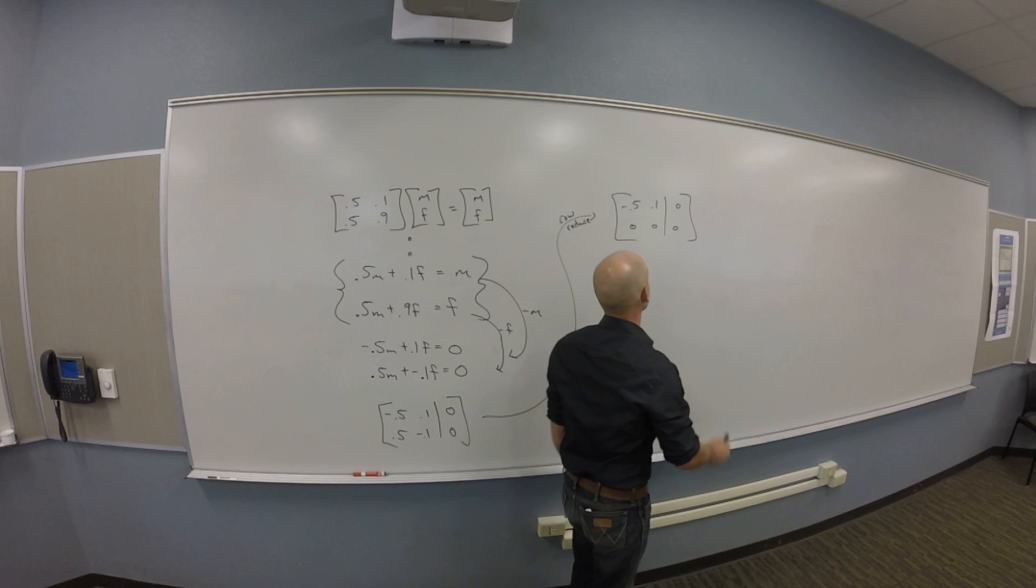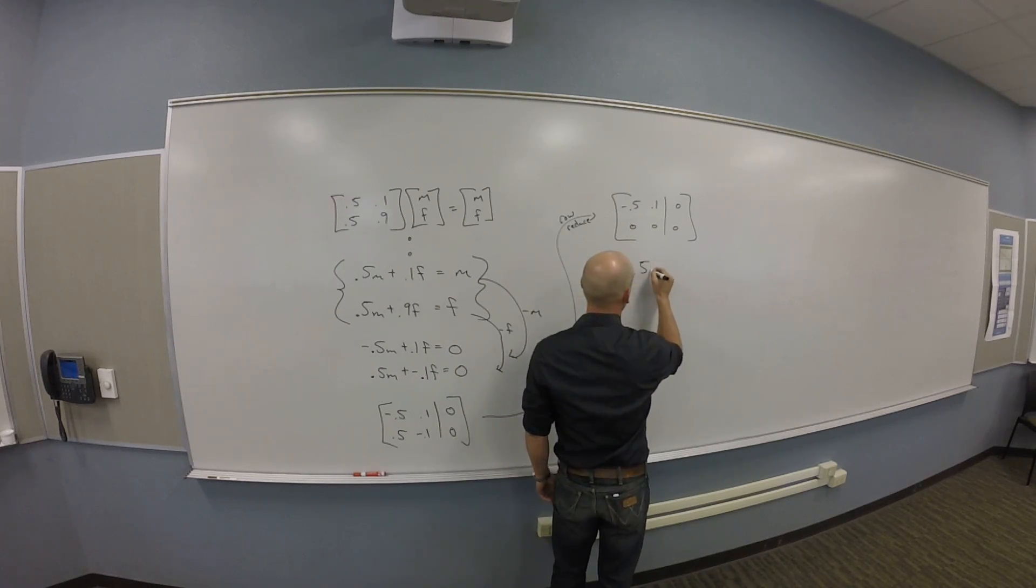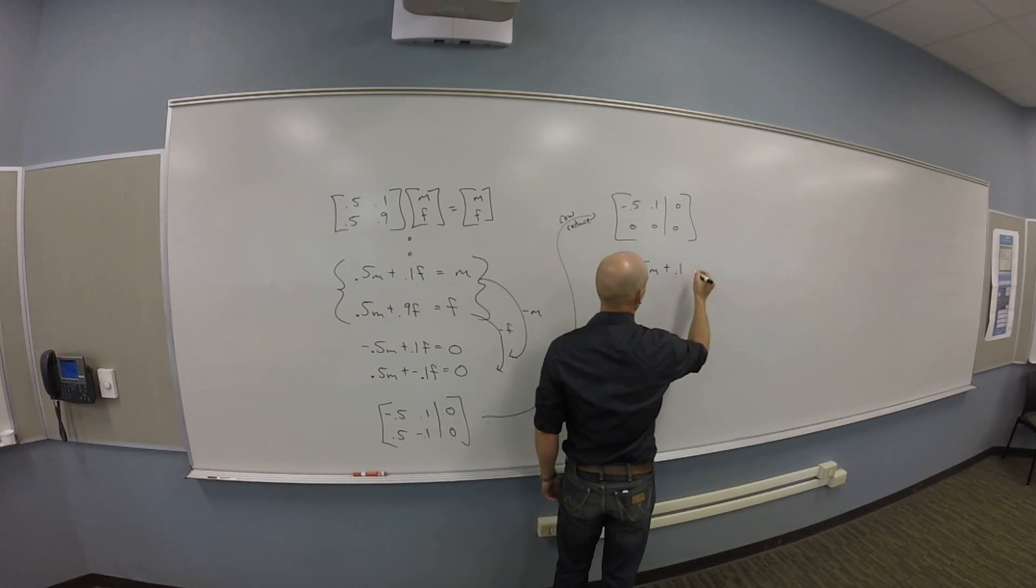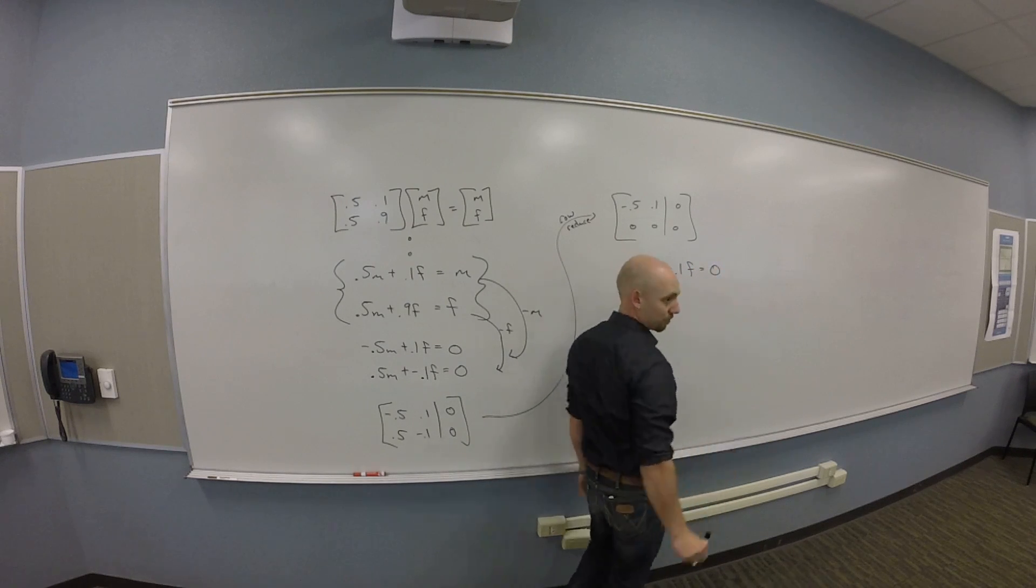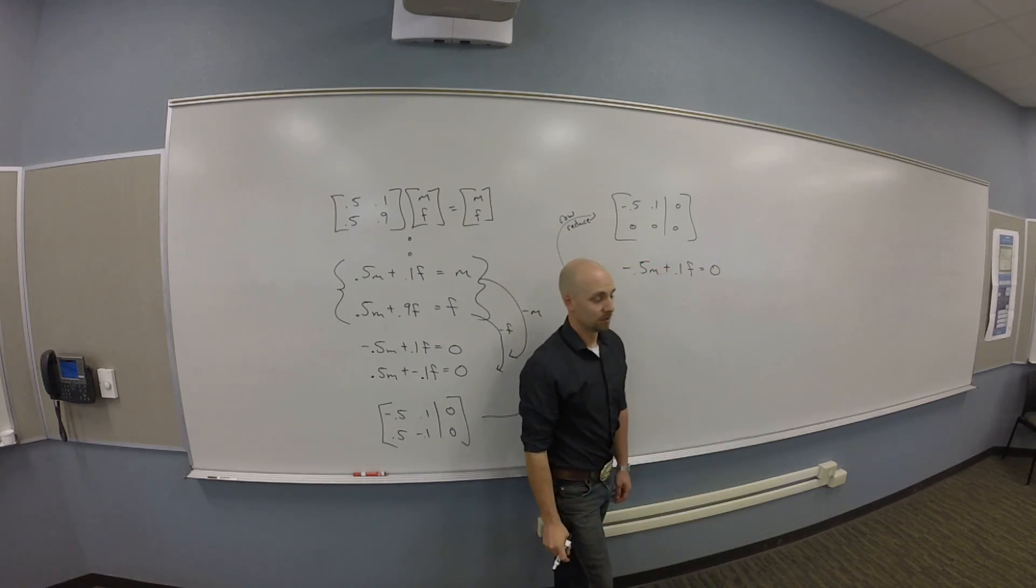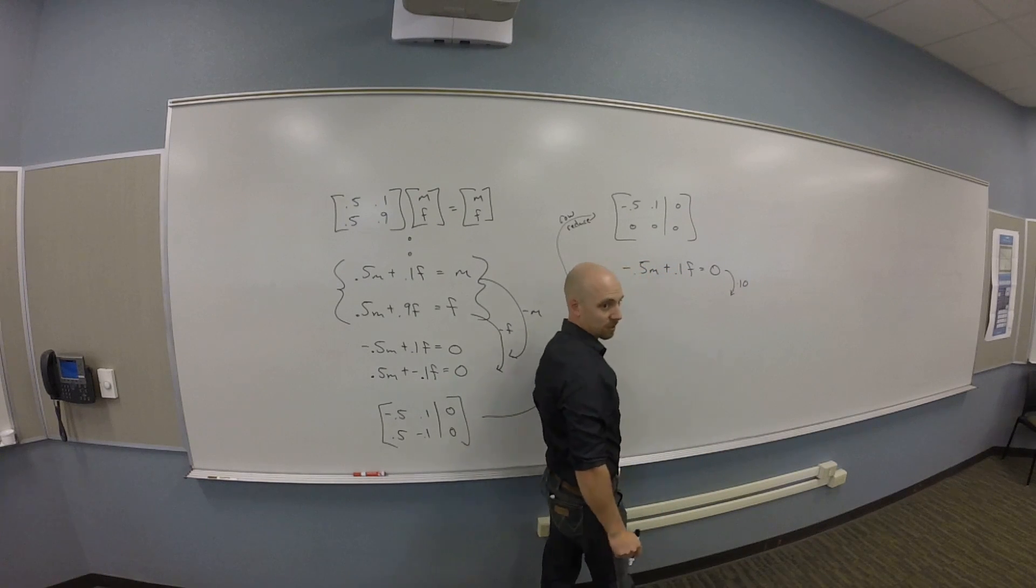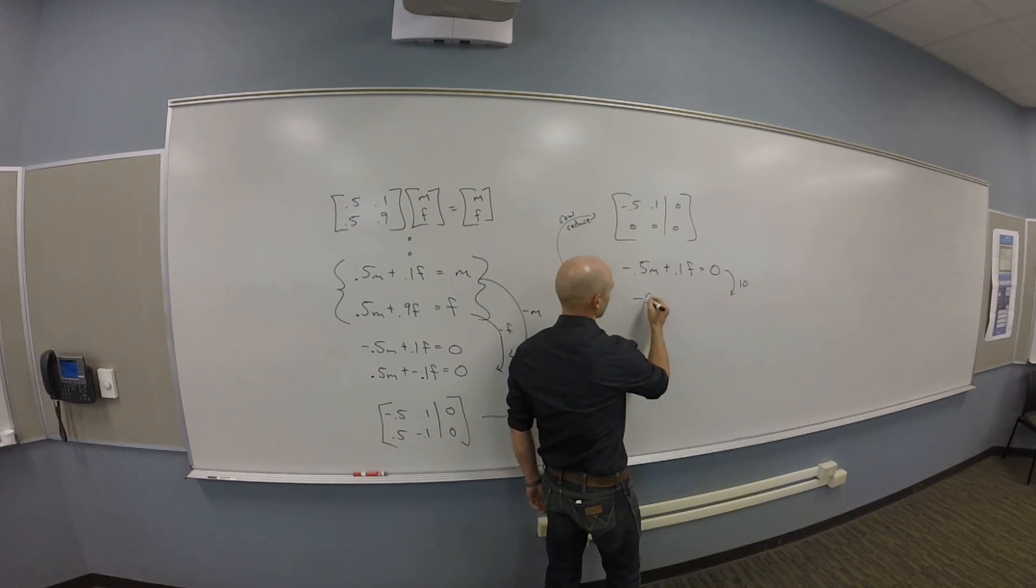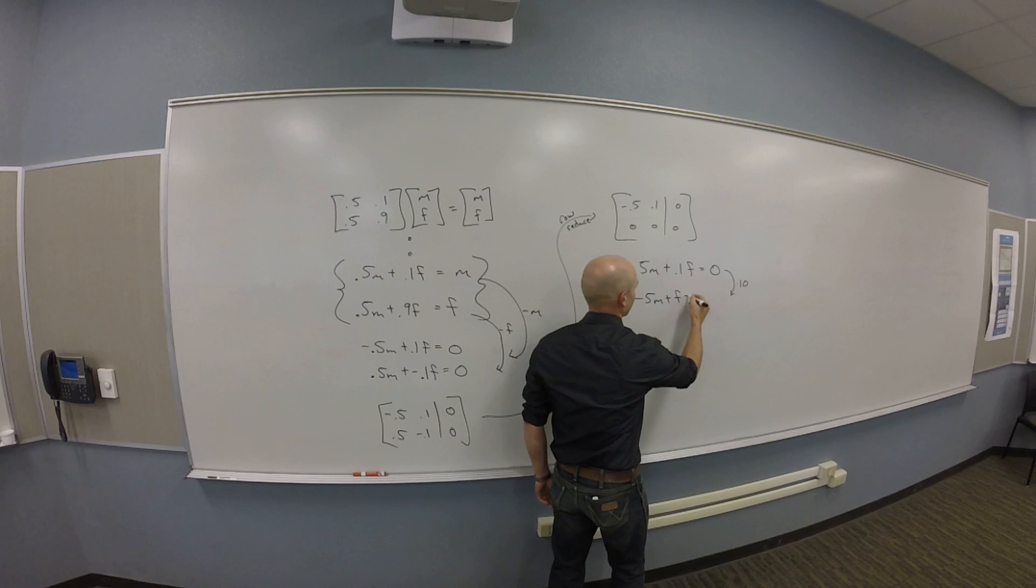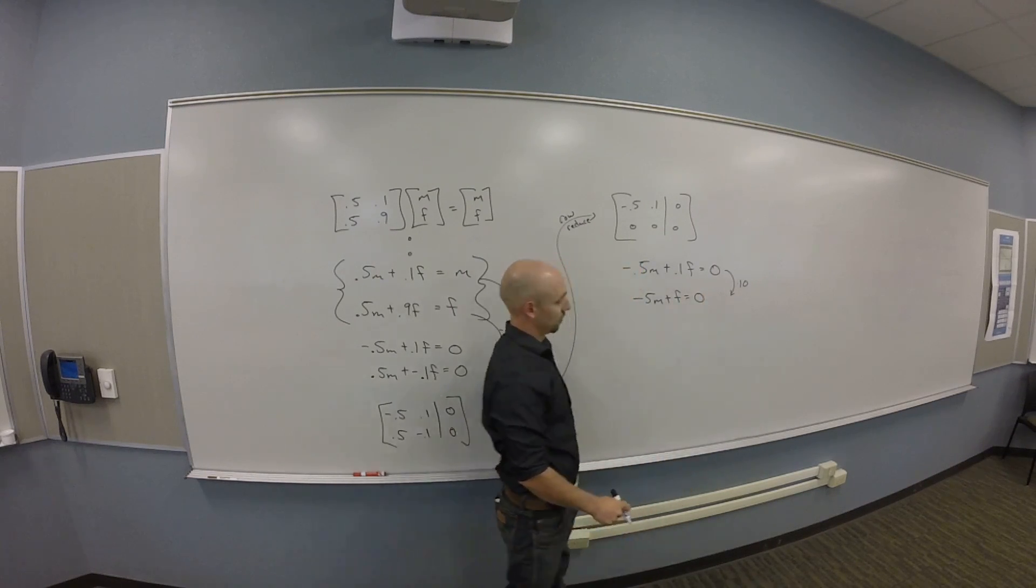So what this says is that minus 0.5m plus 0.1f equals 0. The decimal points are really messing with my data, right? So I'm going to multiply by 10, both sides. And I think that gives me minus 5m plus f equals 0. Then what?